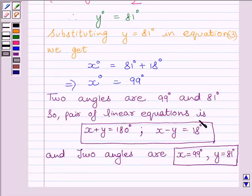Pair of linear equations is x plus y is equal to 180 degrees and x minus y is equal to 18 degrees. And the two angles are x is equal to 99 degrees and y is equal to 81 degrees.